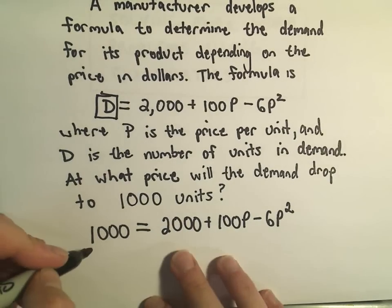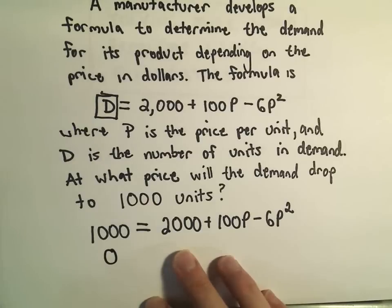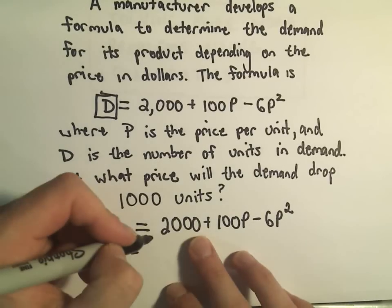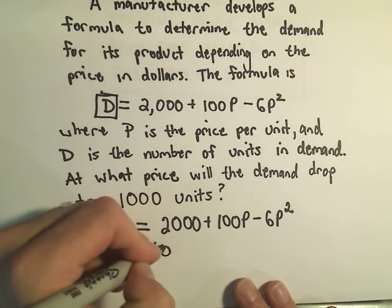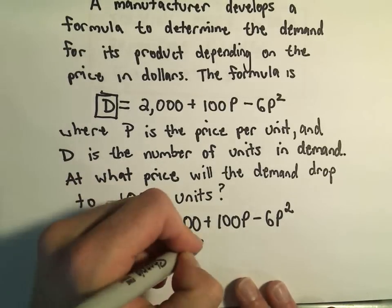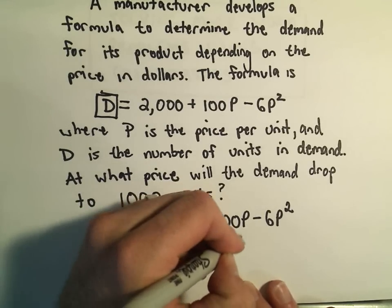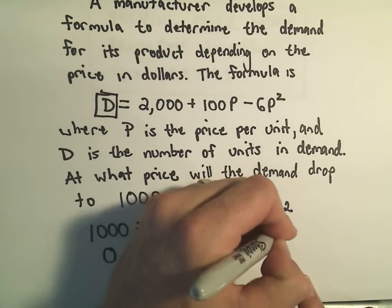What I'm going to do is subtract 1,000 from each side. So that will give me 0 on the left. If I take away 1,000 from 2,000, I'll still be left with 1,000 plus 100P minus 6P squared.